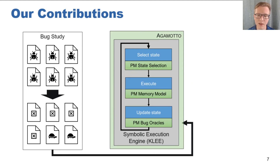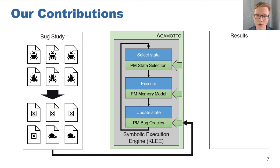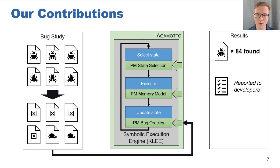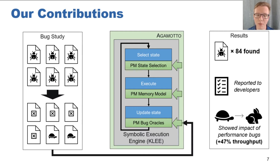We build Agamotto on Klee and augment it with three persistent memory components, which allow Agamotto to support symbolically executing persistent memory applications and rapidly detect any persistent memory bugs they may have. We use Agamotto to find 84 new bugs across a variety of persistent memory applications. To compare, some related work — PMTest and XFDetector — find three and four new bugs respectively. We were also able to confirm many of these bugs with developers, validating our results and helping developers produce more reliable systems. Finally, we perform a novel study of performance bugs and show that by fixing performance bugs, we can improve performance by up to 47%.